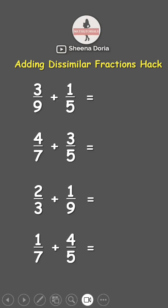Here's a hack on how to add similar fractions using the butterfly method. Let's do the first one: three ninths plus one fifth. First, you need to cross multiply.